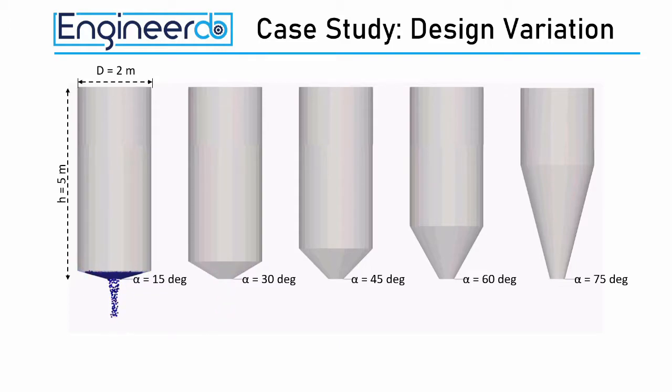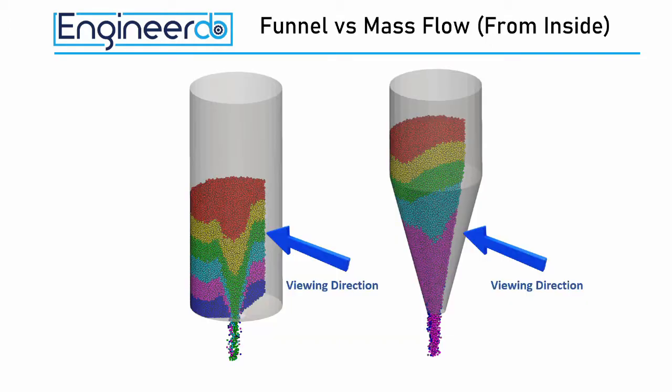To understand what is happening during the discharge inside the silos, we take a closer look to the left silo with core flow and the right silo with mass flow. For this we cut the bulk material inside in half and take a look to the cutting surface.